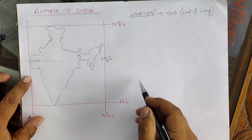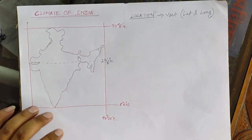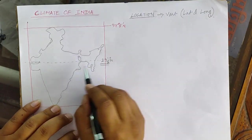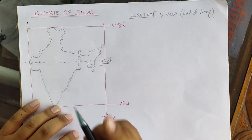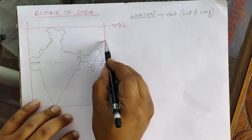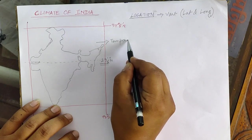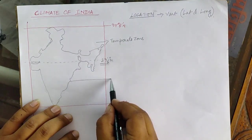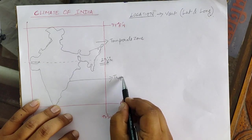The Tropic of Cancer is also passing through the center of the country, as you can see. It separates the country into two halves — the northern half falls under the temperate zone and the southern half falls under the tropical zone.